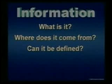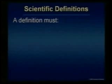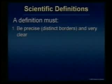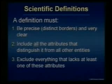Well, let's start with the definition of a definition. We're going to go all the way down to the basics to understand this. What makes a good scientific definition? I do this because I've read through a lot of textbooks and very few of the definitions are valid — they've made them so fuzzy that students don't even know what they're learning anymore. A good definition needs to be precise, with distinct borders: include all the attributes that distinguish it from other entities, and exclude everything that lacks at least one of those attributes.